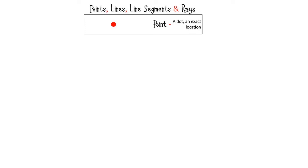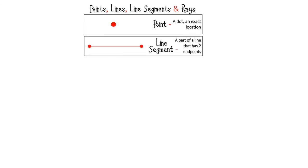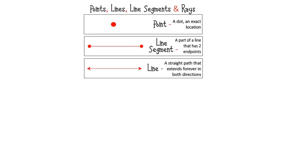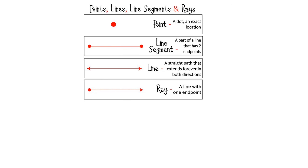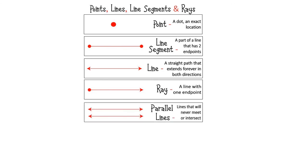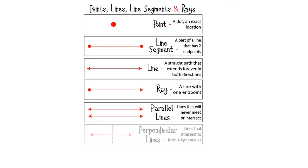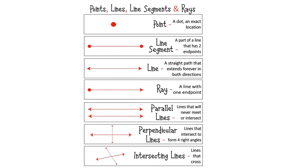Let's revise all the concepts we have learnt. First, a point is a tiny dot which shows an exact location. A line segment is a part of a line with two end points. A line is a straight path that extends forever in both directions. A ray is a line with only one end point. Parallel lines are lines that will never meet or intersect. Perpendicular lines are lines that intersect to form four right angles. Intersecting lines are the lines which cross each other.